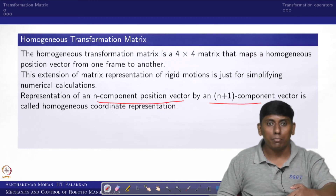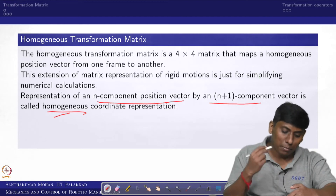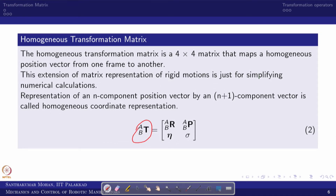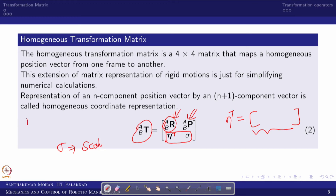The transformation matrix is written with four sub-components: rotational information, positional information, and additionally a perspective vector (eta transpose) and a scaling factor sigma. The scaling factor is important because if you write the position vector of B with respect to A as x, y, z scaled by sigma, the scaling lets you use any unit as long as the three components are the same entity — x, y, z all in the same unit.